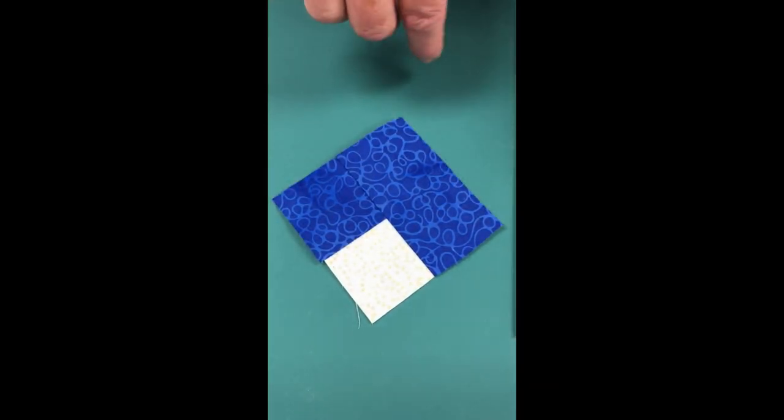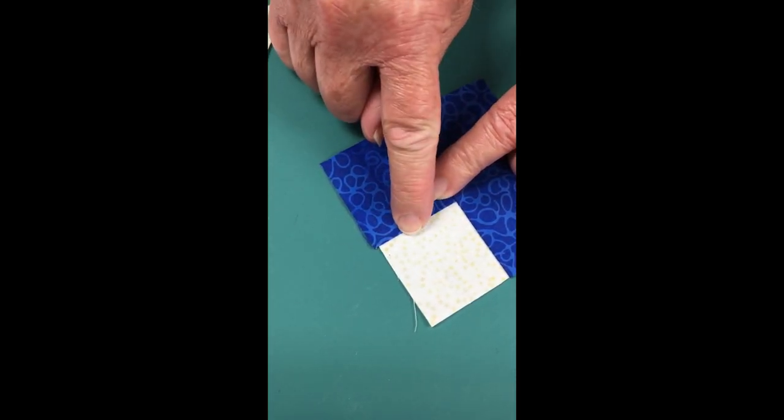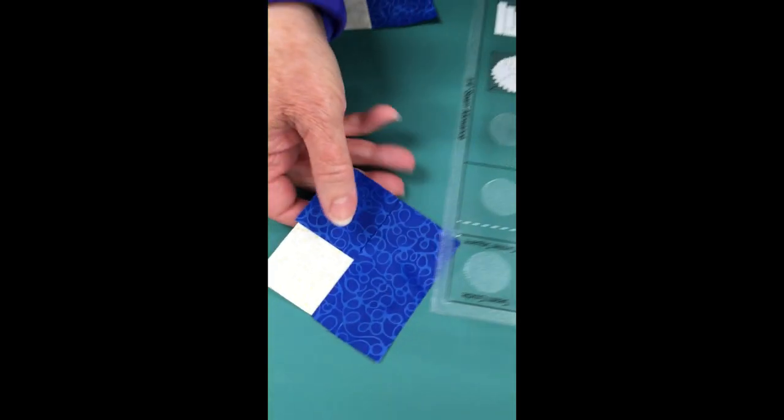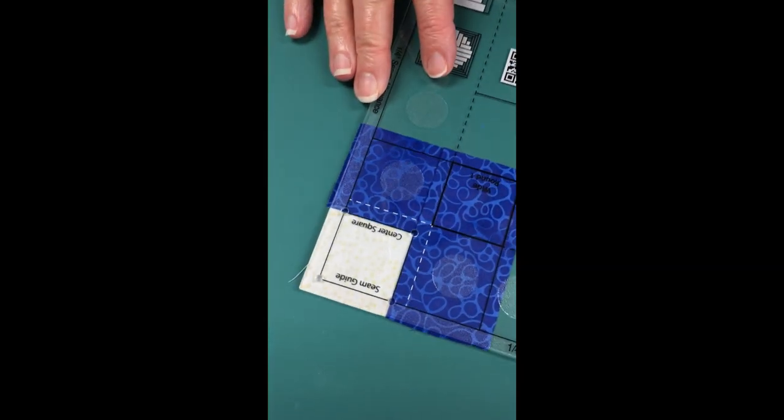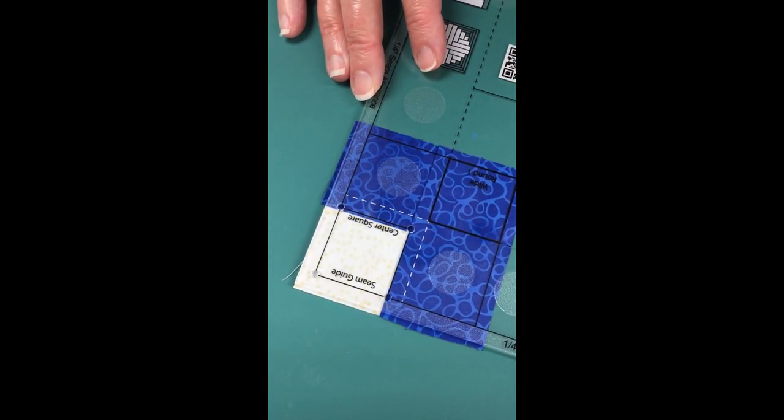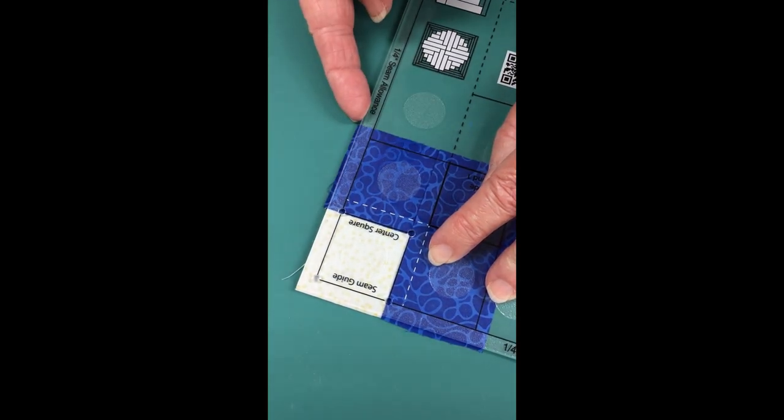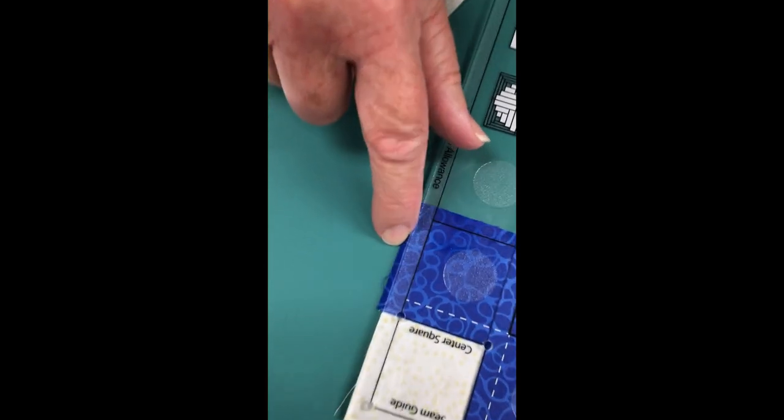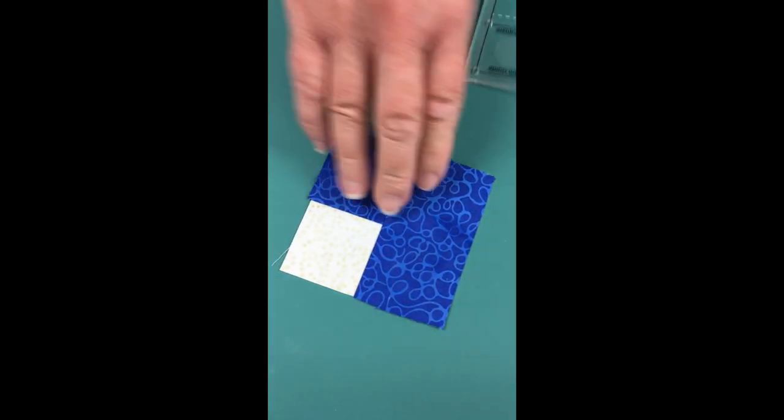Since I chain pieced this, you can see a little jogged corner where I rough cut the chain apart. I want a straight edge before adding my next two logs. I can use the ruler, lining up the center square marking with the seam allowance built in, to trim and get a clean edge. This cleans up those jogged corners before adding the next logs.